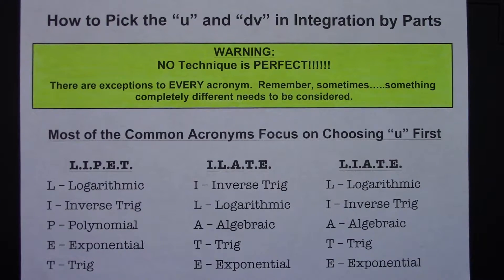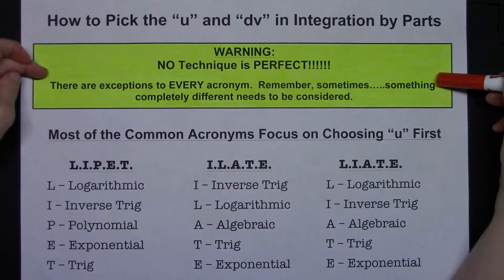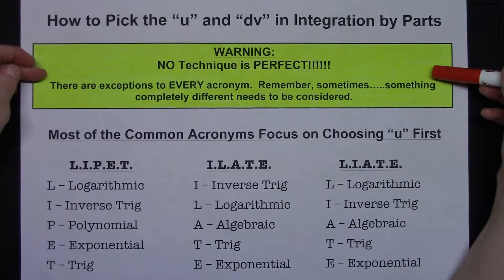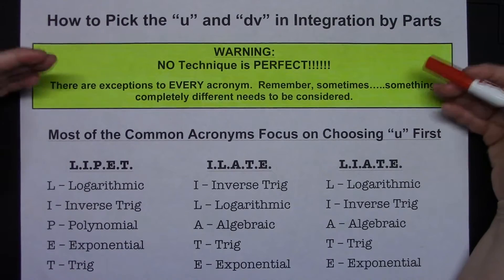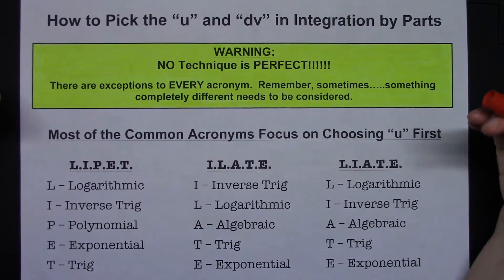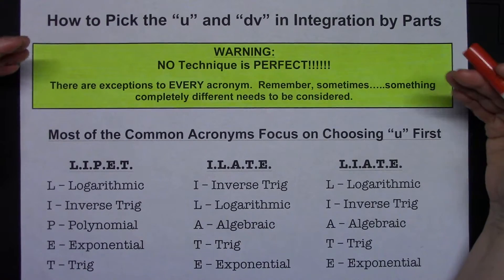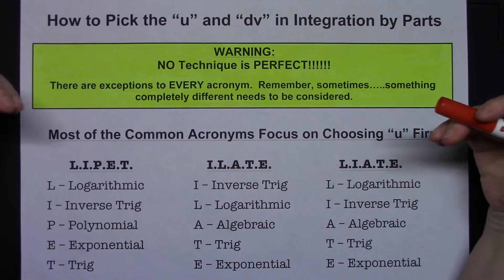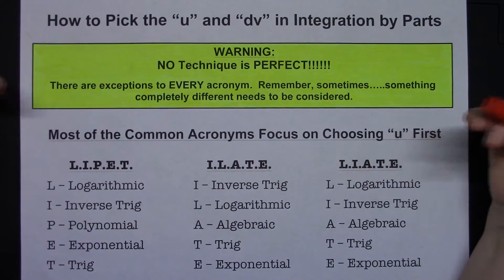In this video I'm going to focus on how you go about picking your U and DV in integration by parts. Before we start, I want to note this warning: there's no technique that is absolutely perfect. There are exceptions to every acronym you might be given for picking the U and DV. Sometimes it's going to work really well, and then you'll come up with a problem where it doesn't. Sometimes you're just going to have to do something completely different. If you try it and it doesn't work, pick something else and see if the integration by parts gets a little bit simpler.